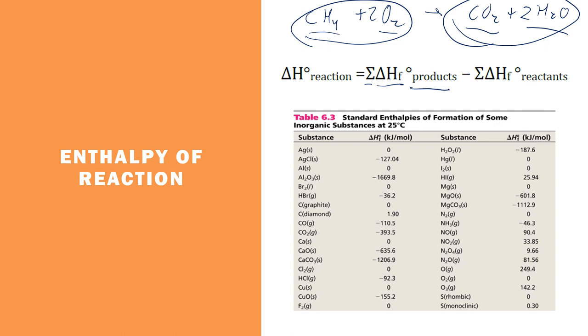But you will have a table of values typically, or they'll give you all but one, and you have to figure out the missing one. But these are some different delta HFs for different substances. And you'll see there's a bunch of zeros. If you already have a substance in its standard state, so like chlorine gas.